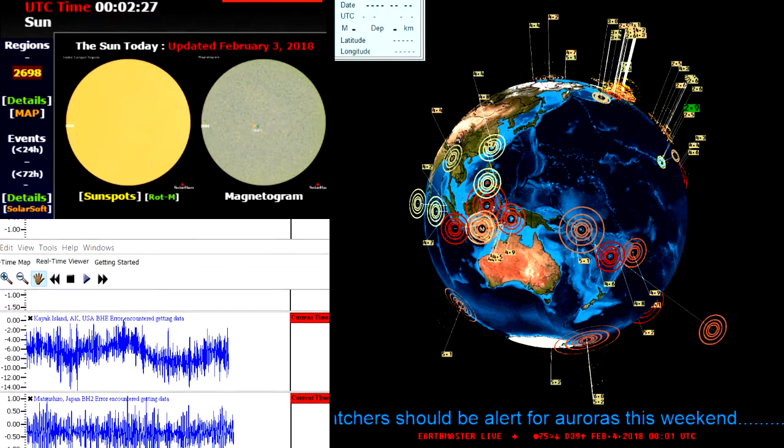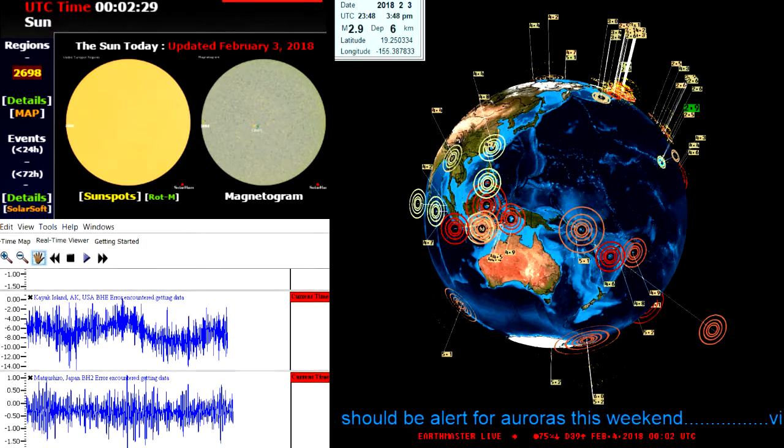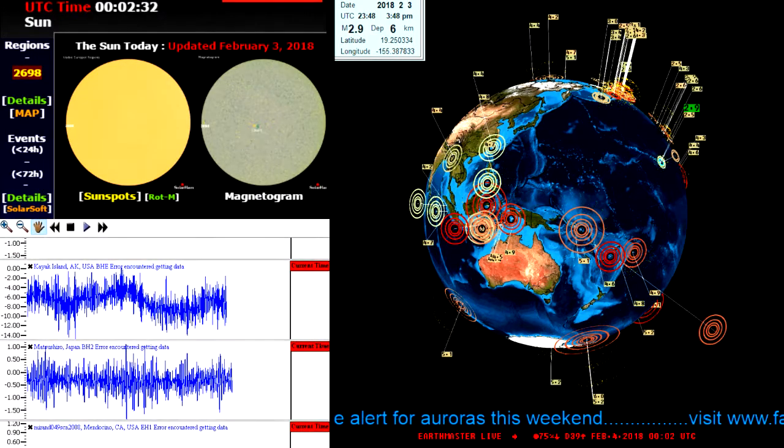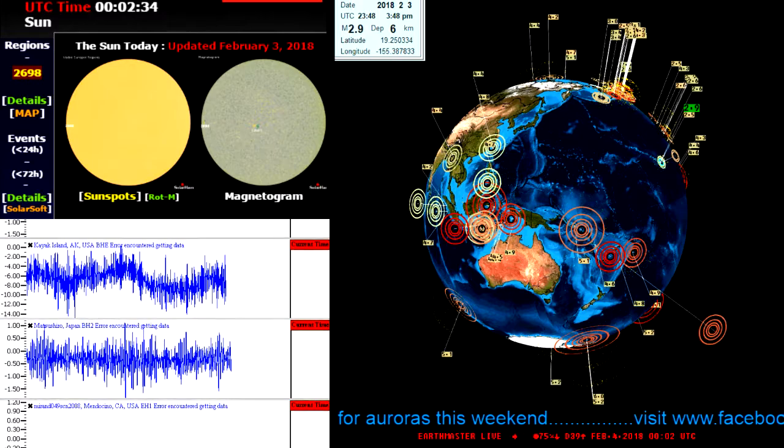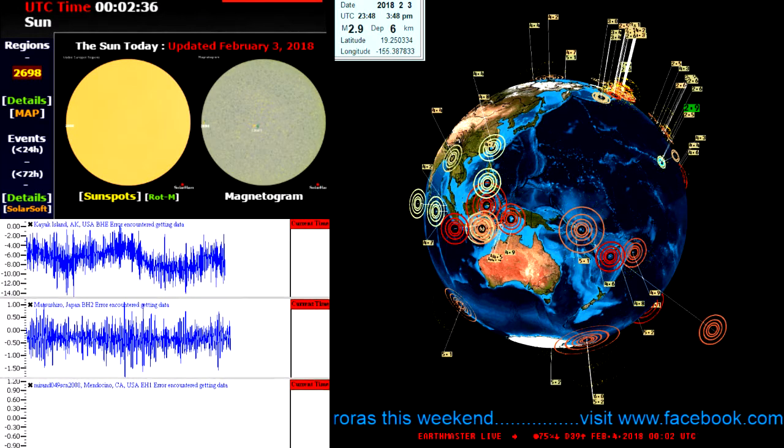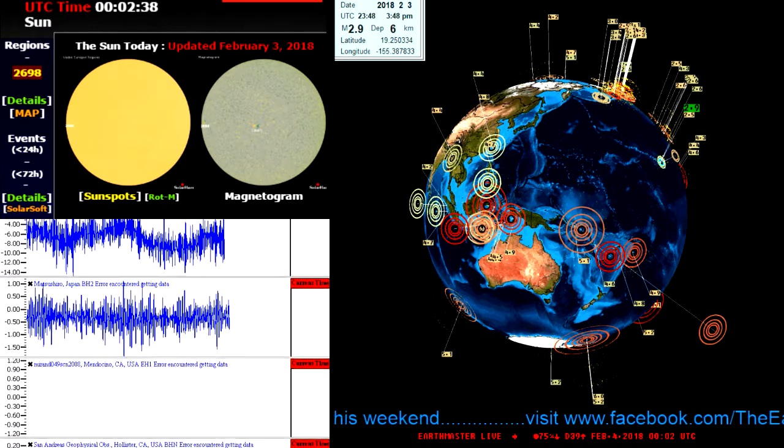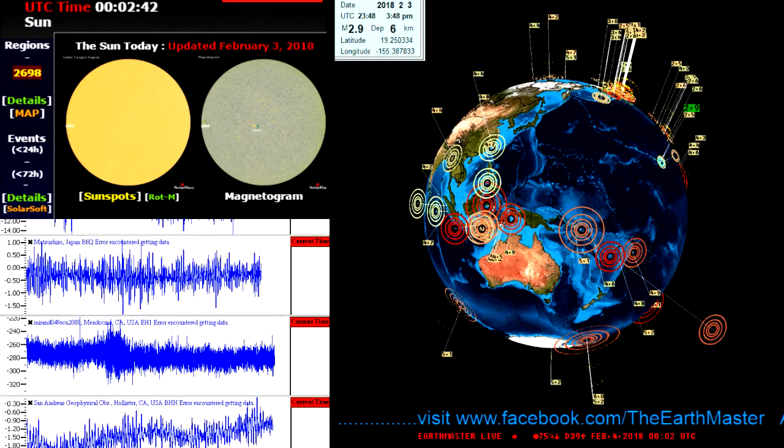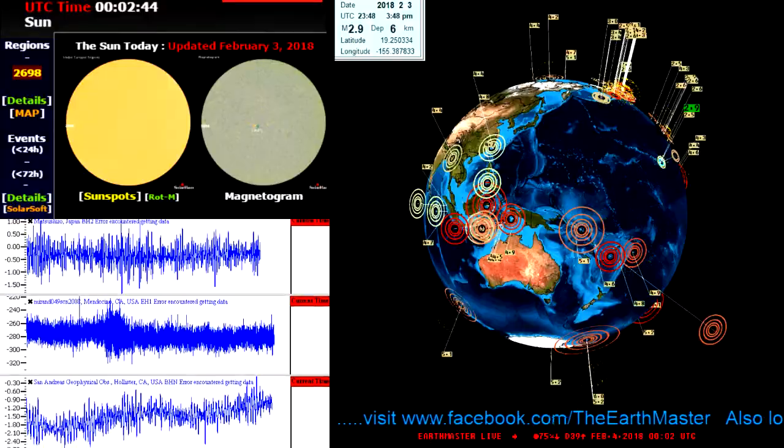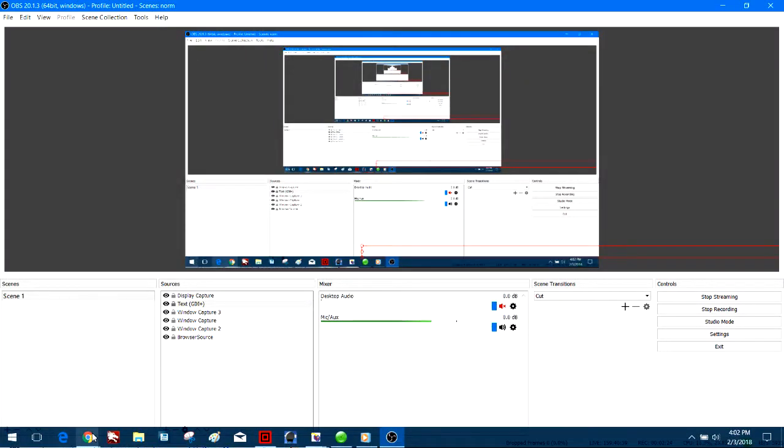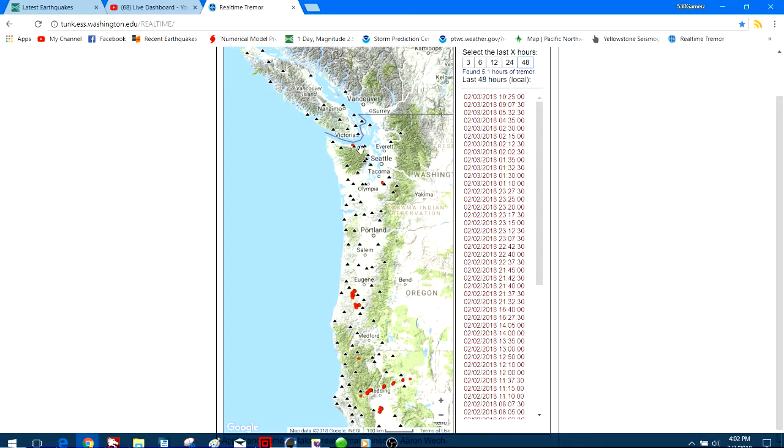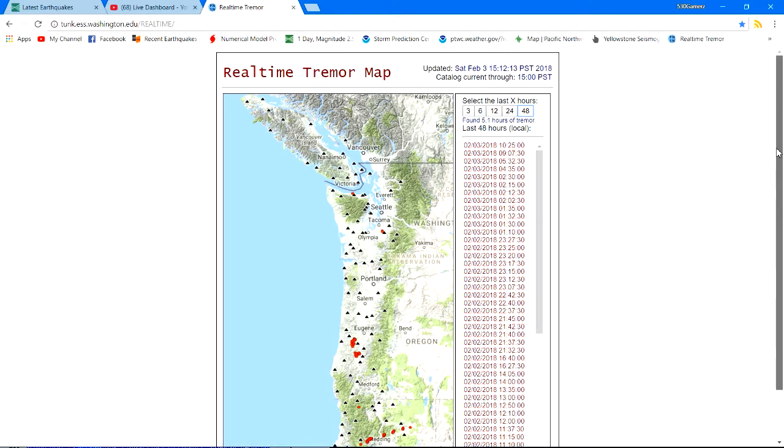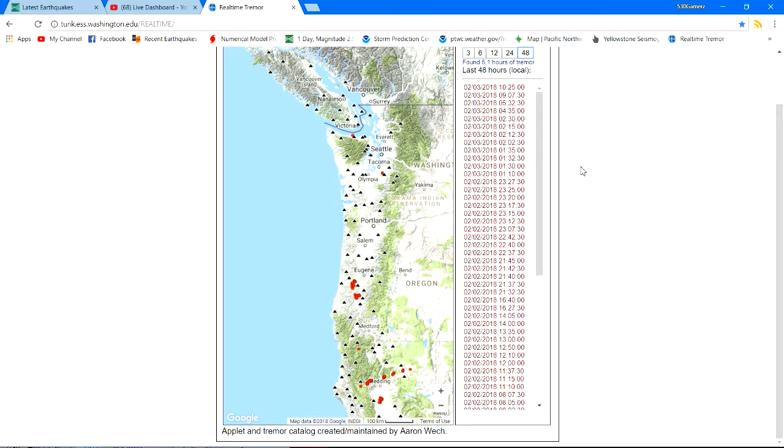4.3 off the northern California coastline. I'm pretty sure I'm going to take you over here and show you guys exactly what I'm talking about, associated with the slow slip event movement that's ongoing and has been continuing for quite some time now. Hold on one second here. I think my hotkeys are messing up again.